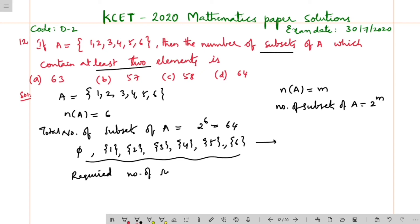Required number of subsets is nothing but 64 minus total here 6 plus 1, 7, so your answer is 57. So option B is the answer, okay.